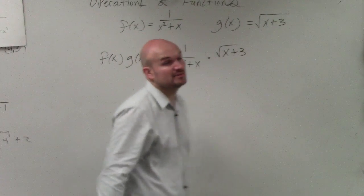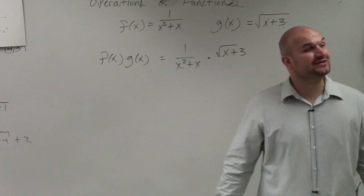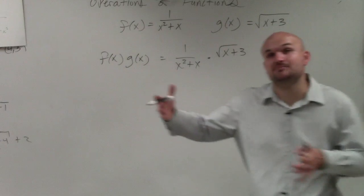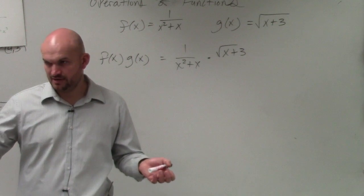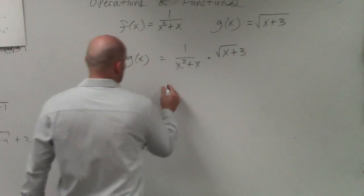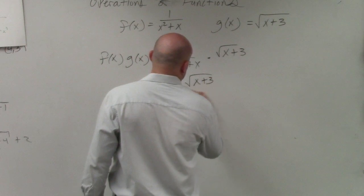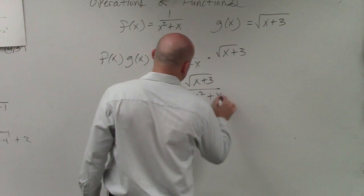The nice thing about multiplication in comparison with adding and subtracting, we don't need common denominators. We just simply need to multiply the numerator times the numerator, denominator times the denominator. So we get x plus 3 over x squared plus x.